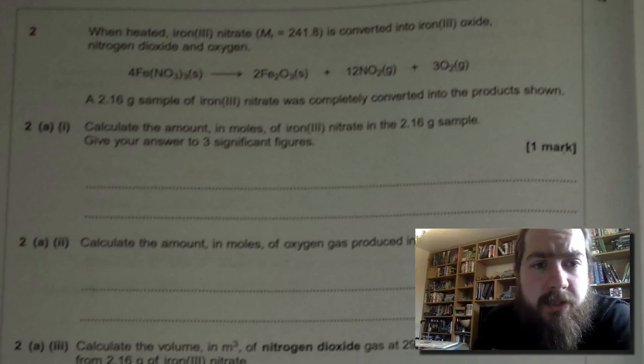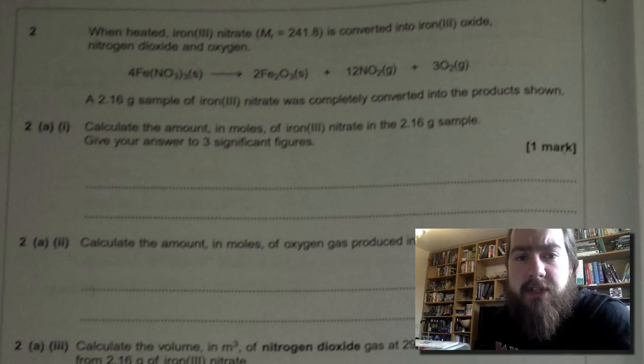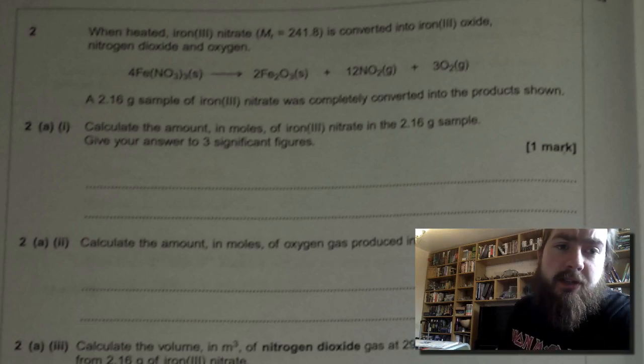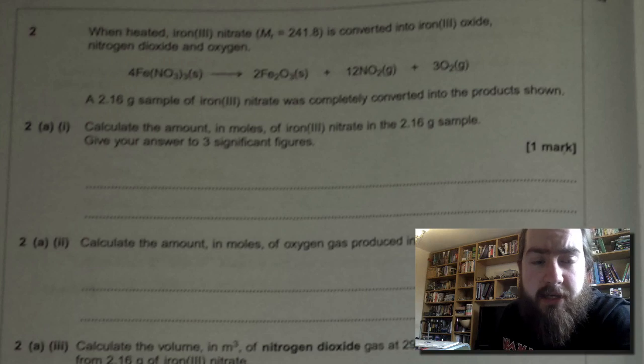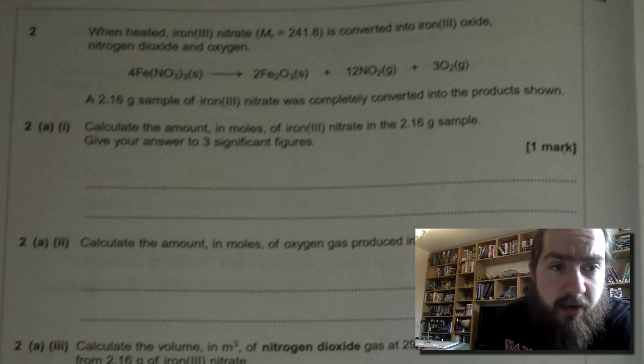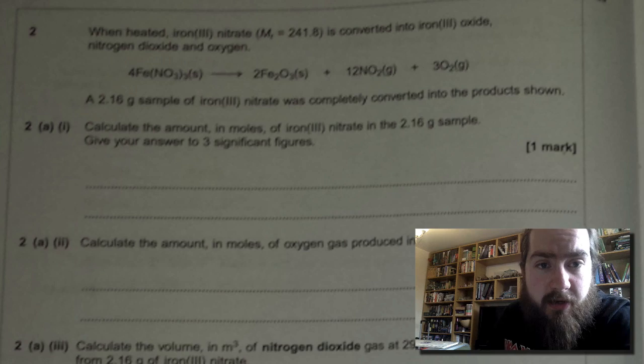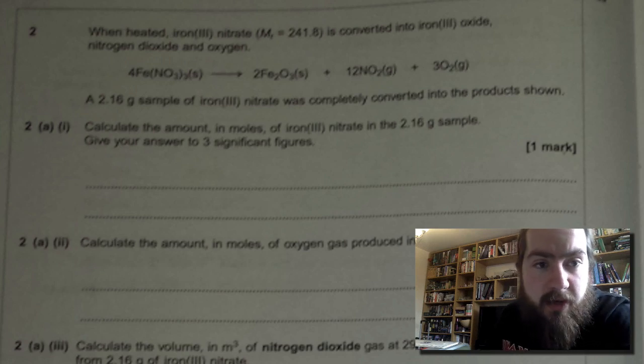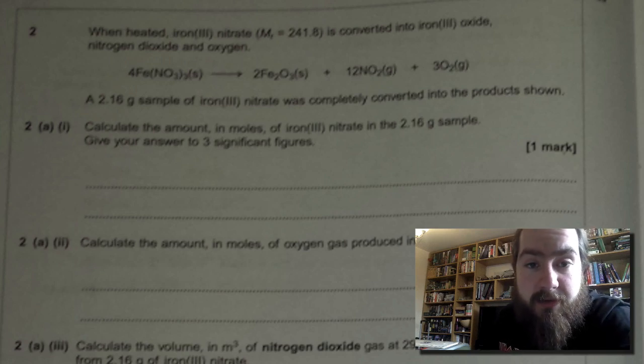When heated, iron(III) nitrate with a molecular mass of 241.8 is converted into iron(III) oxide, nitrogen dioxide, and oxygen, and it gives you the formula there. So we've got 4 moles of iron nitrate goes to 2 moles of iron oxide, 12 moles of nitrogen dioxide, and 3 moles of oxygen.